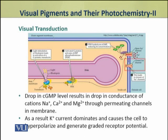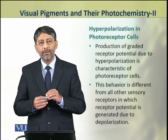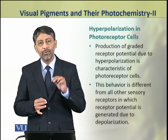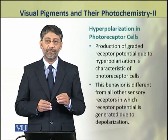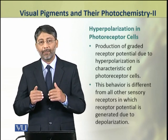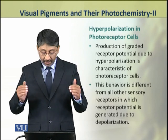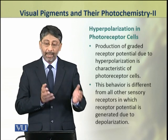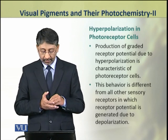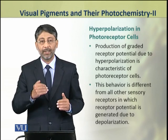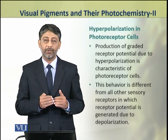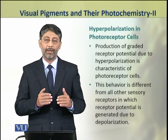This hyperpolarization produces the graded receptor potential. The production of graded receptor potential due to hyperpolarization is a characteristic of these photoreceptor cells. This is highly unusual in nature because receptor potentials are generally produced due to depolarization, but here receptor potential is produced due to hyperpolarization.